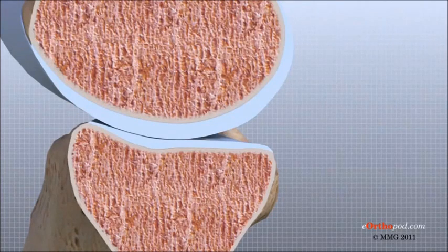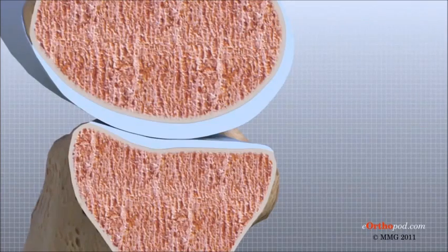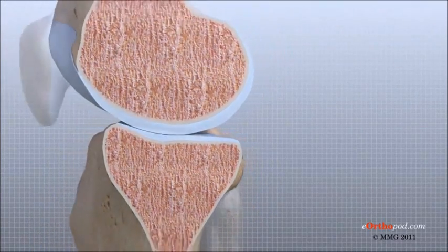We have articular cartilage essentially everywhere that two bony surfaces move against one another, or articulate. In the knee, articular cartilage covers the ends of the femur, the top of the tibia, and the back of the patella.